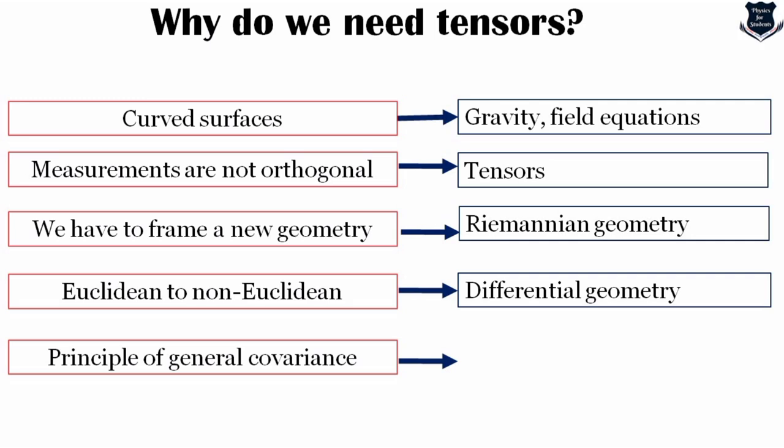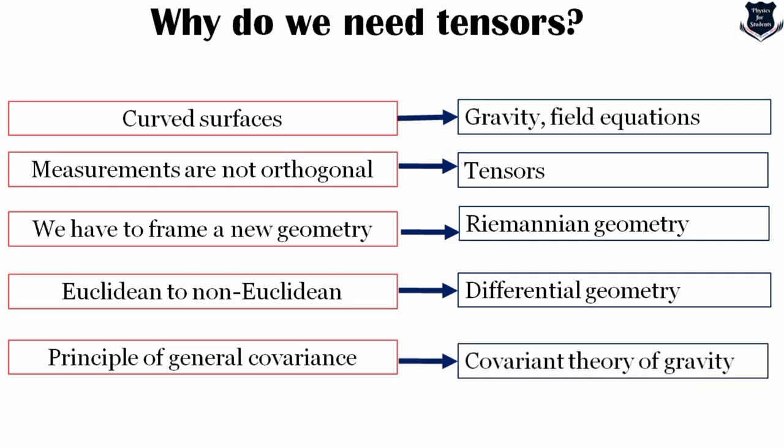There is also a principle of general covariance: when things change, they should change according to certain rules — that is why we call it a covariance theory of gravity. In an earlier video I showed how Marcel Grossman helped Einstein to frame the complete covariance theory of gravity, because the knowledge of tensors was unknown to Einstein. It was his friends and colleagues who finally helped bring tensors into general relativity, allowing Einstein to achieve his milestone of a covariance theory of gravity.